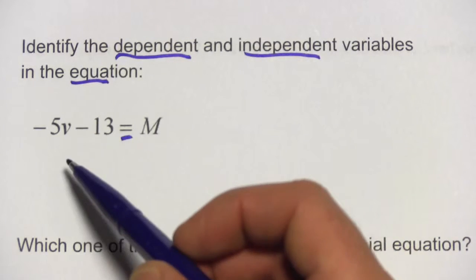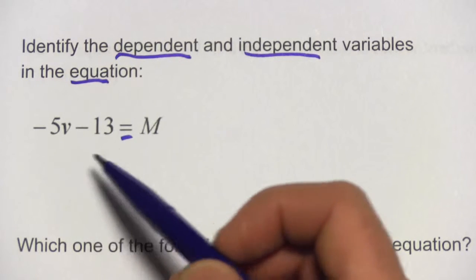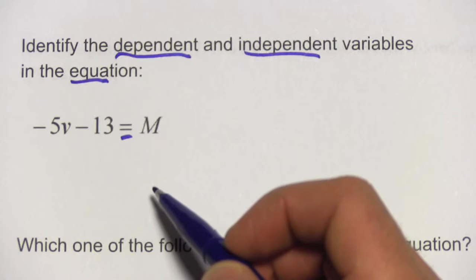So, for example, in this problem, we might put in a bunch of different values for v and crunch the numbers, multiply it by negative 5, subtract the 13, and then we'll get out some values for m.